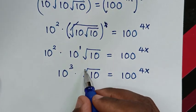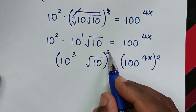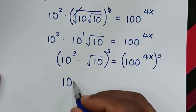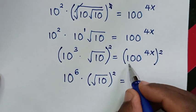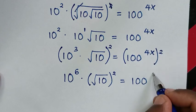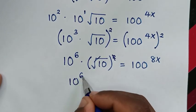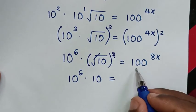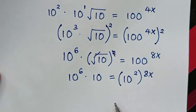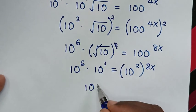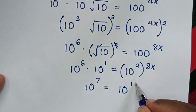In the next step, to remove the remaining square root, we square both sides again. The left side becomes 10 power of 3 squared, which is 10 power of 6, times square root of 10 squared, giving 10 power of 6 times 10 power of 1, which is 10 power of 7. On the right, 100 power of 4x squared becomes 100 power of 8x, and since 100 equals 10 power of 2, this is 10 power of 16x.